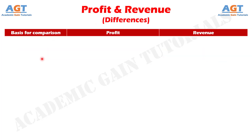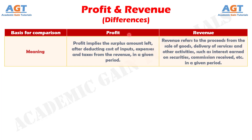So, let's look into the basic differences between revenue and profit in a tabular form. Difference number one: profit implies the surplus amount left after deducting cost of inputs, expenses and taxes from the revenue in a given period. Whereas, revenue refers to the proceeds from the sale of goods, delivery of services and other activities, such as interest earned on securities, commission received, etc., in a given period.